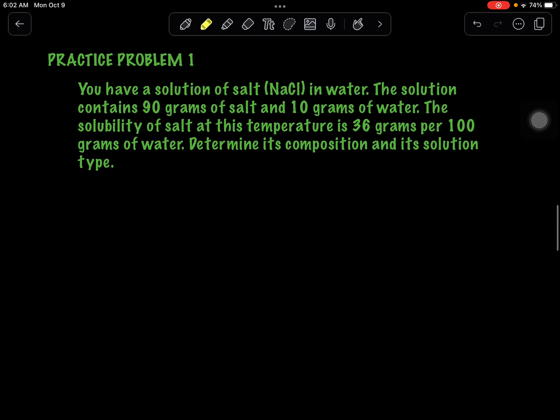Good morning, Grade 7, and welcome back to our practice problem 1 as we continue our discussion on mass concentration. Practice problem 1 states: if you have a solution of salt or sodium chloride in water, the solution contains 90 grams of salt and 10 grams of water, and the solubility of salt at this temperature is 36 grams per 100 grams of water. Determine its composition and its solution type.